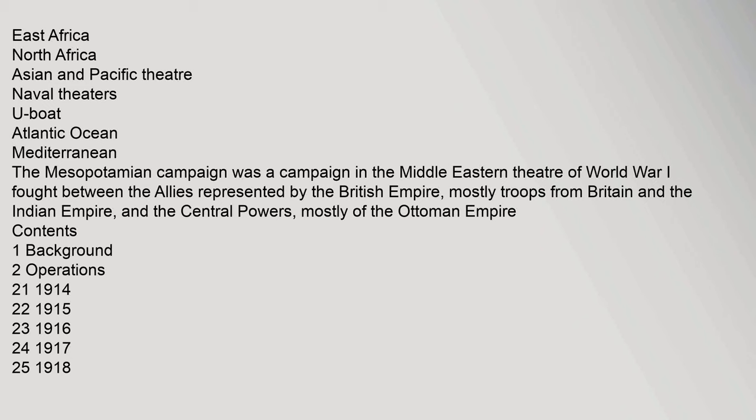The Mesopotamian Campaign was a campaign in the Middle Eastern Theater of World War I, fought between the Allies, represented by the British Empire — mostly troops from Britain and the Indian Empire — and the Central Powers, mostly of the Ottoman Empire.